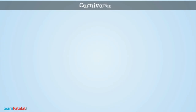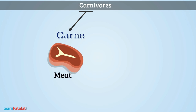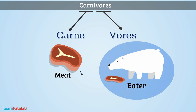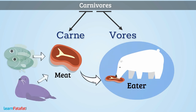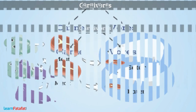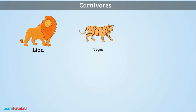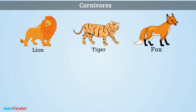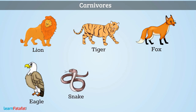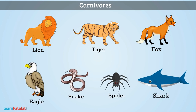Carnivores: 'Carn' means meat and 'Vores' means eater. So, the animals which obtain their food only from other animals, i.e., in the form of meat, are called Carnivores. Examples include Lion, Tiger, Fox, Eagle, Snake, Spider, Shark, etc.